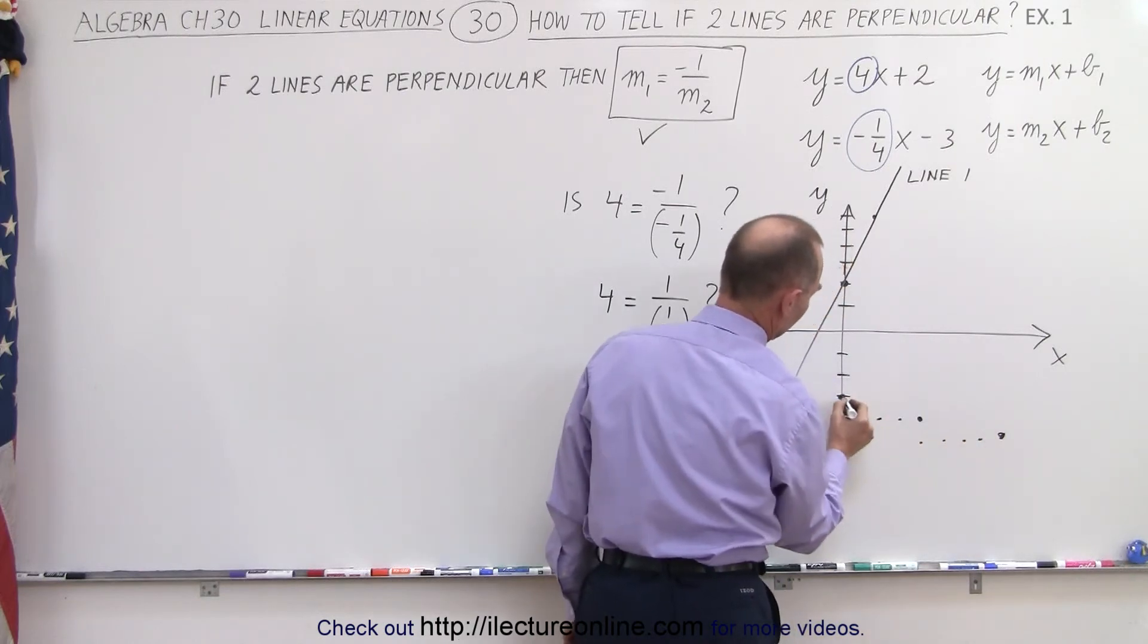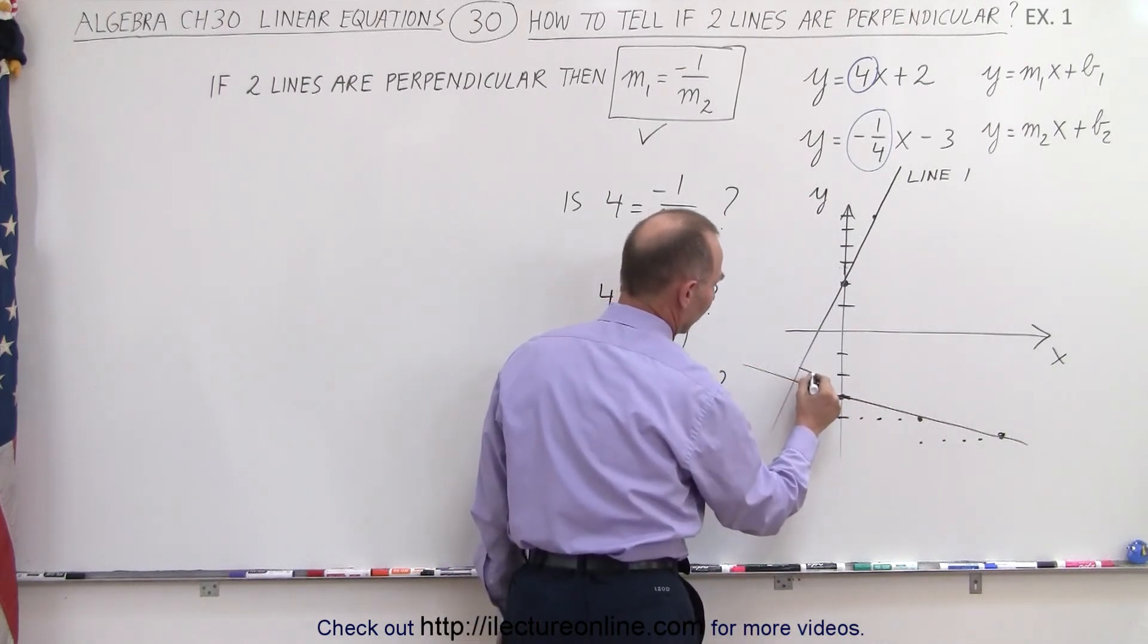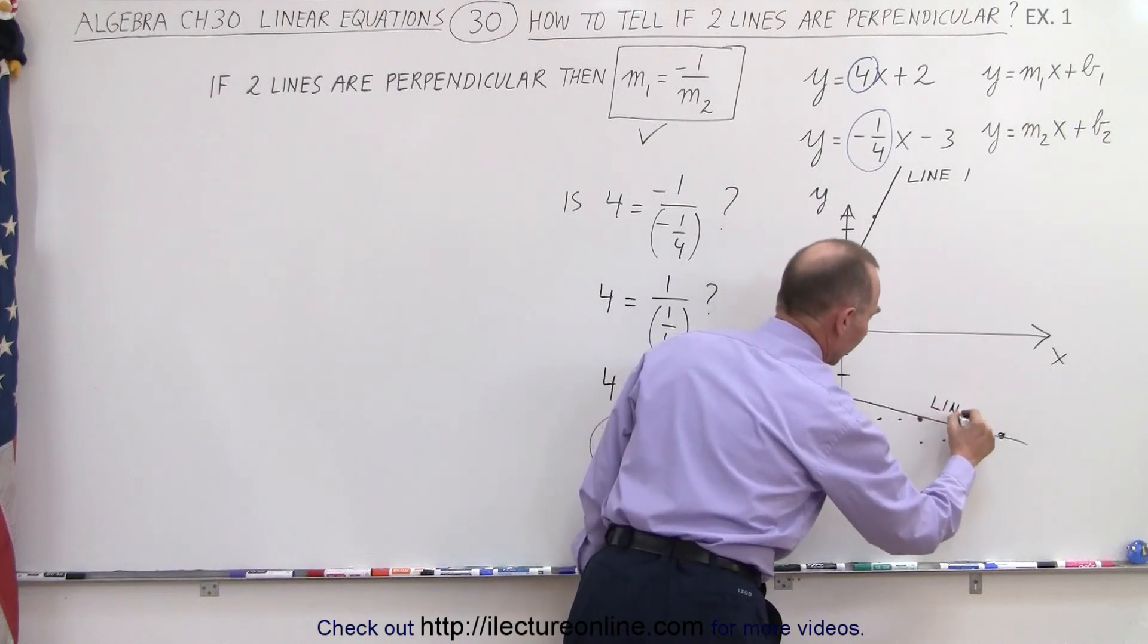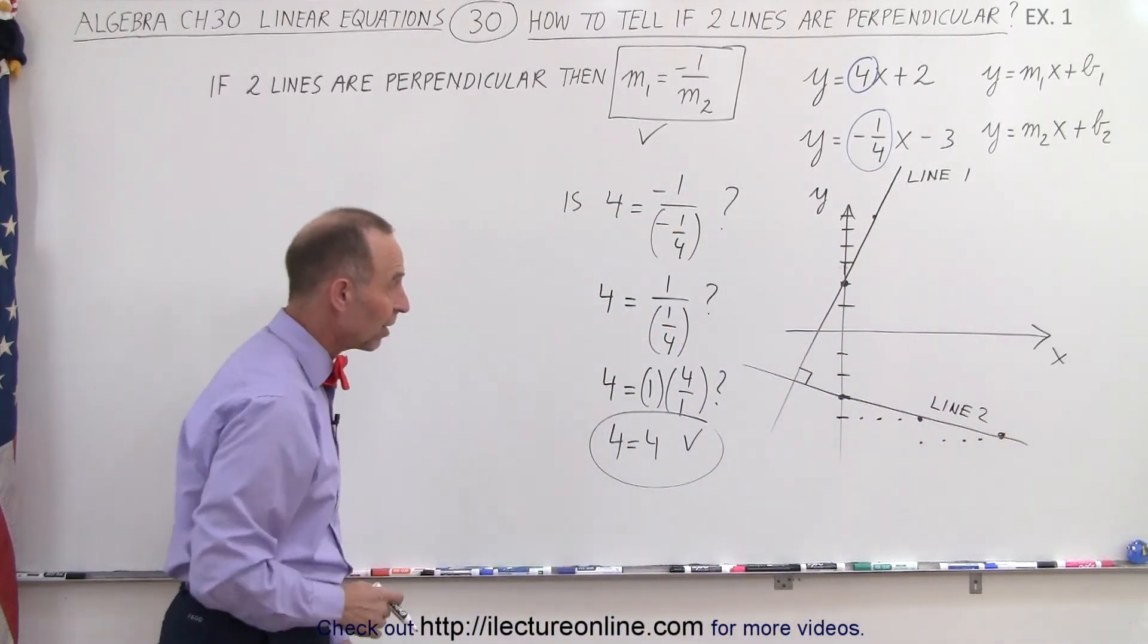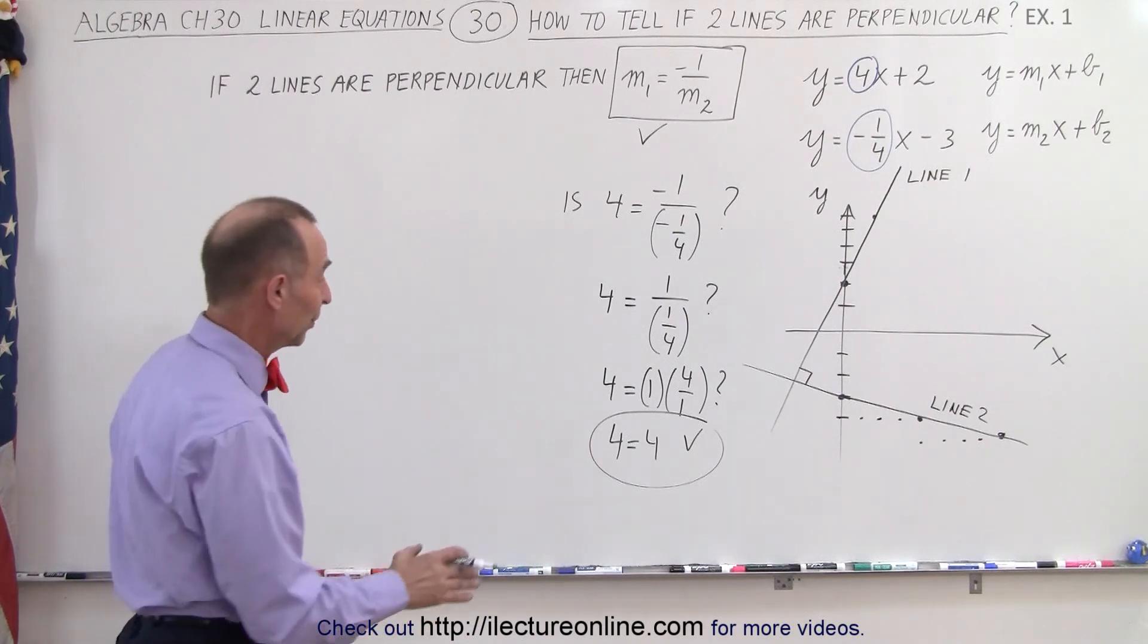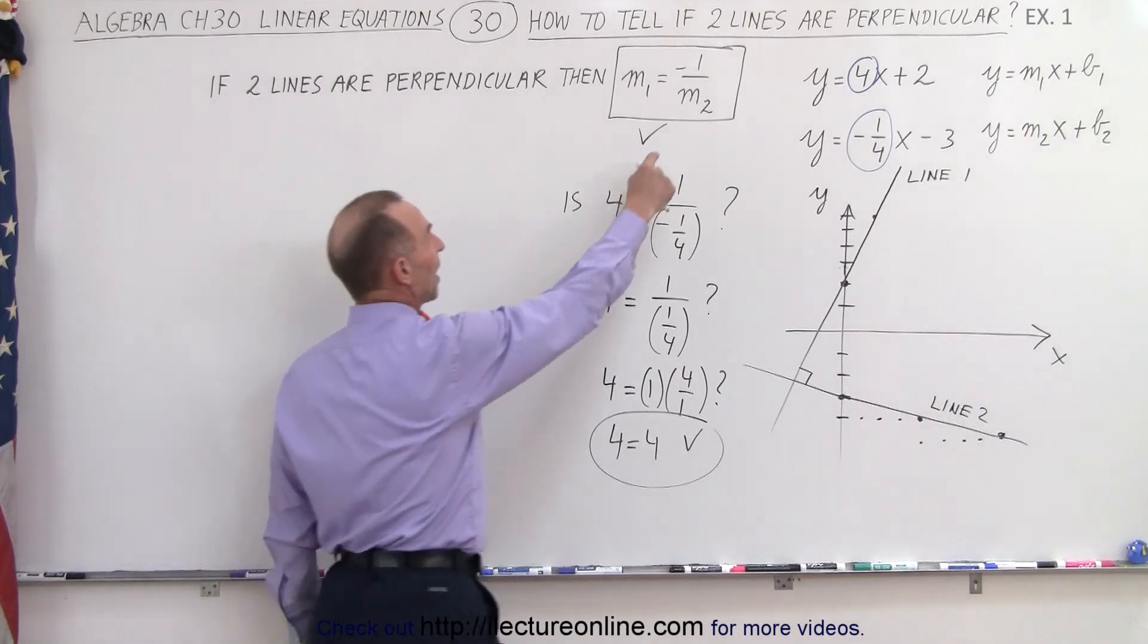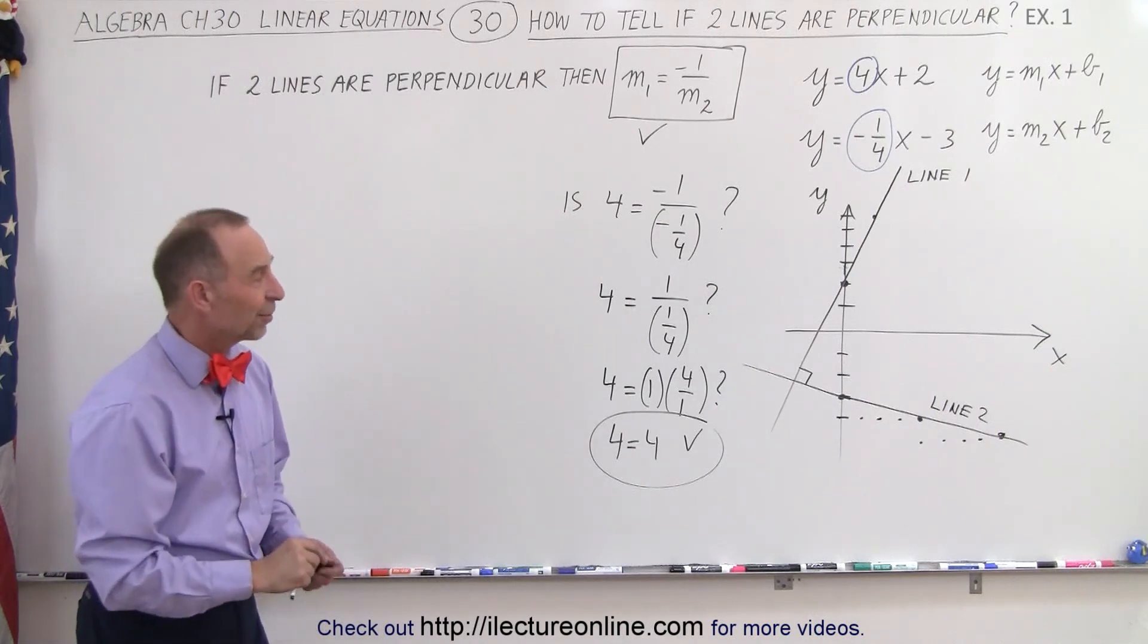So if we connect those points and continue over here, then notice that yes, they do appear to be perpendicular. Line 2 - and of course, it's not going to be perfect because this was freehand drawing, but it does give a pretty good indication that the two lines are indeed perpendicular. This is the way you can definitely decide if they're perpendicular - if they match this condition right there. And they do. And that is how it's done.